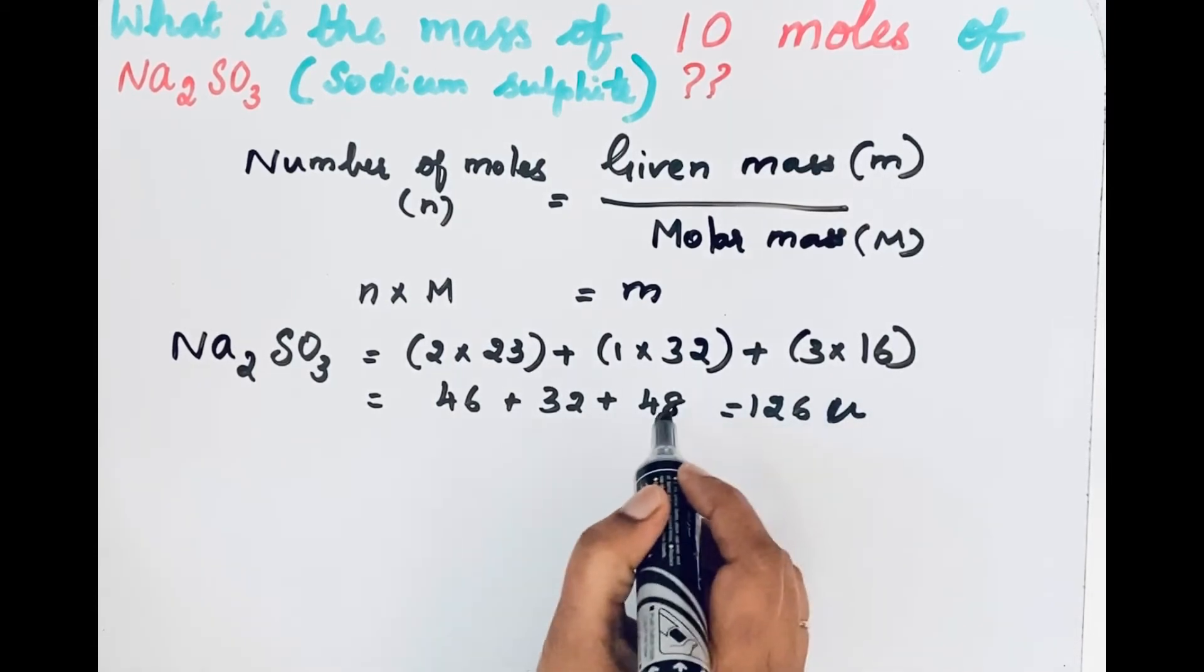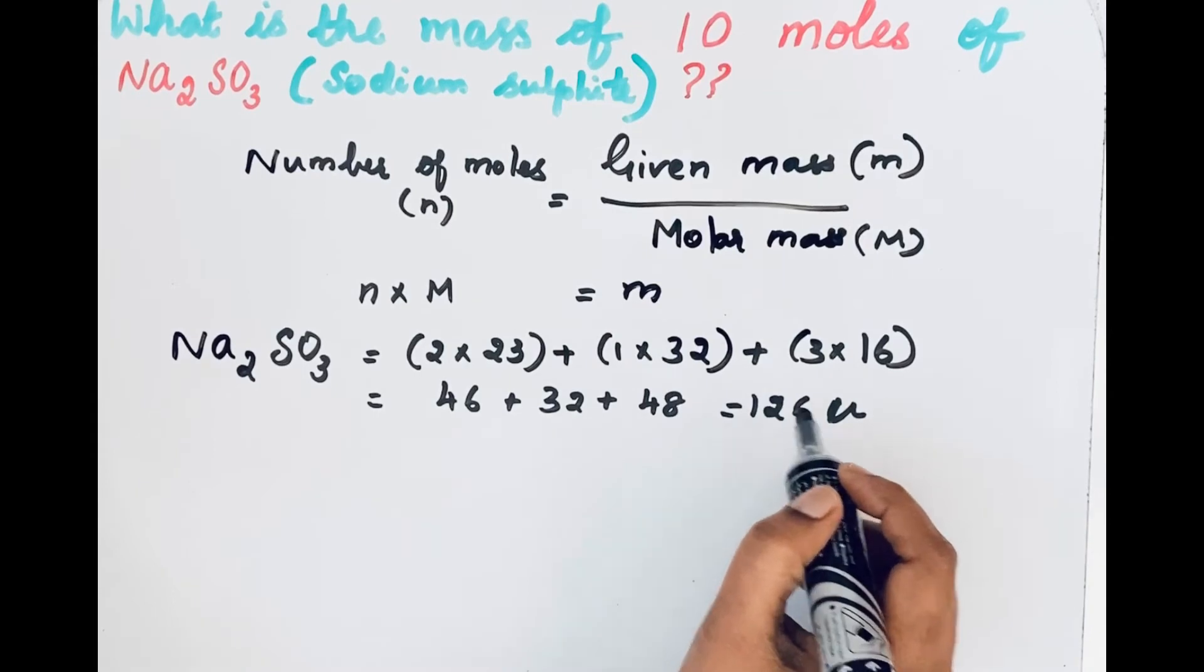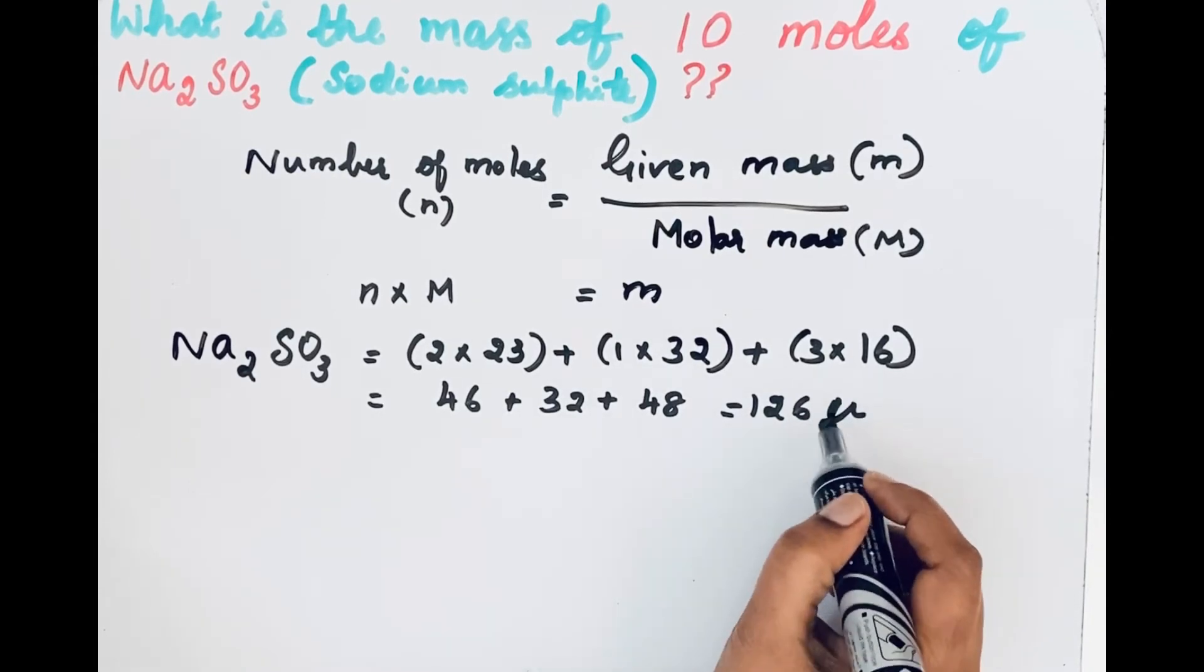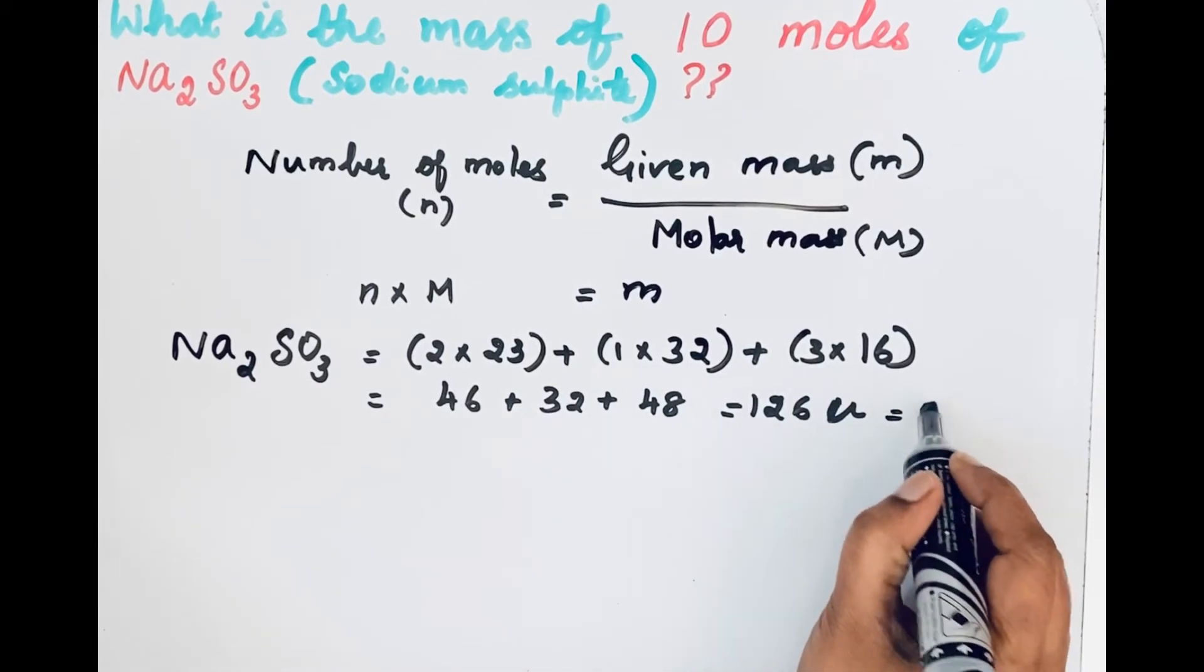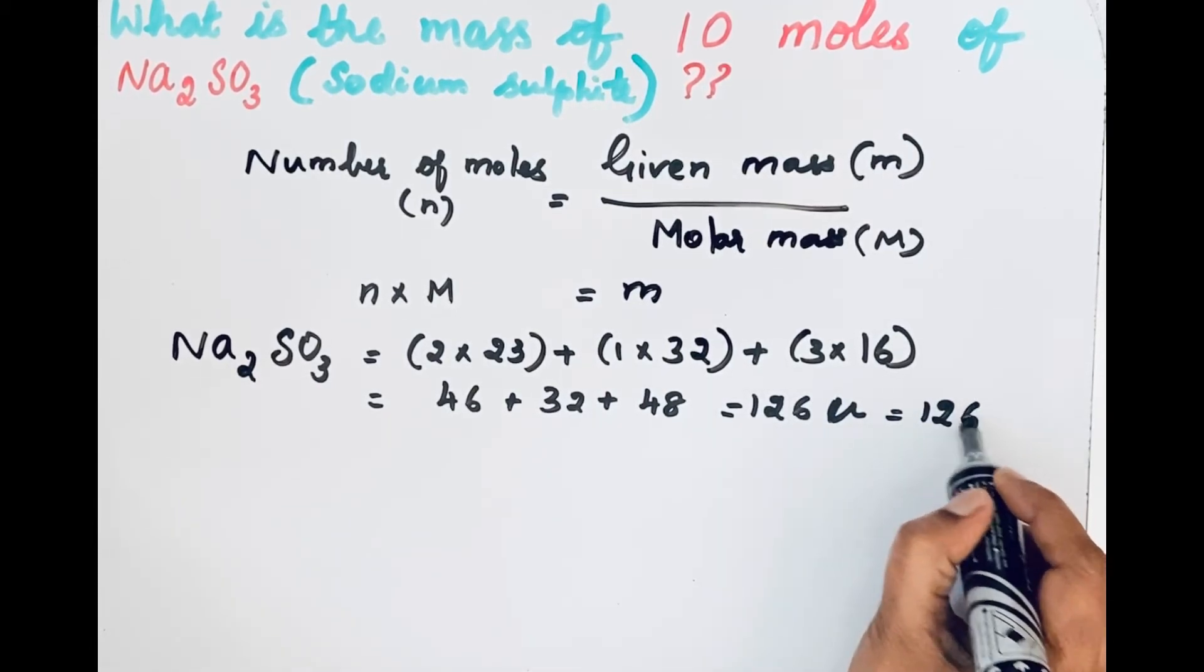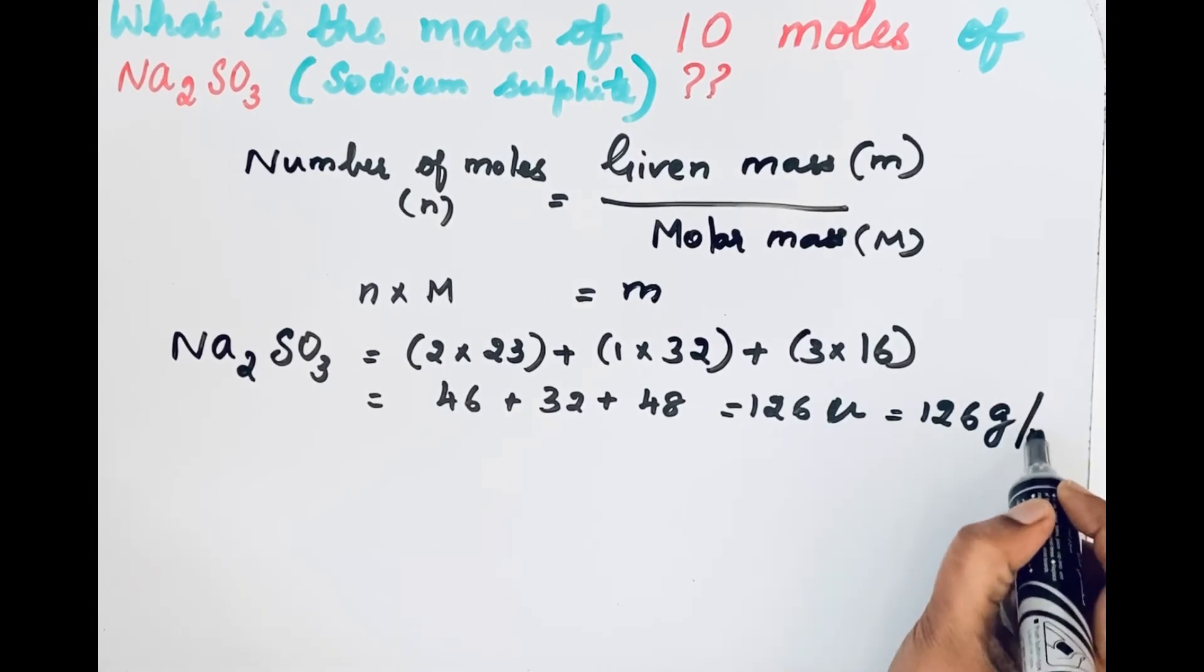So to convert this molecular mass into molar mass, we are just changing that unit. So 126 gram per mole.